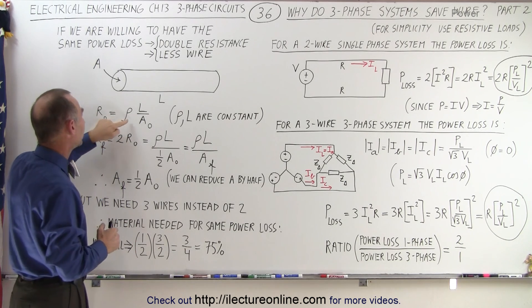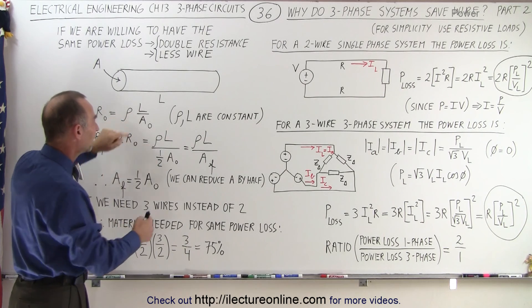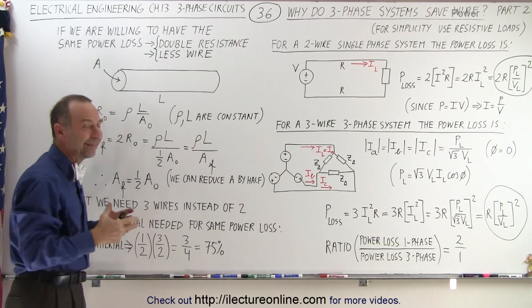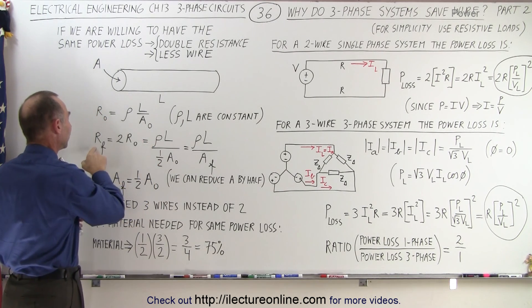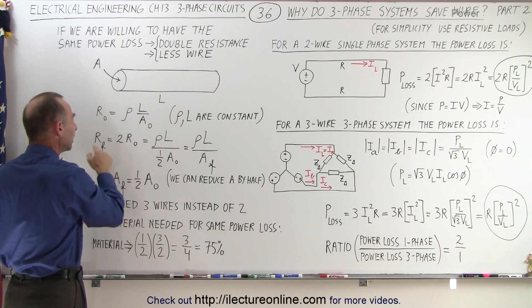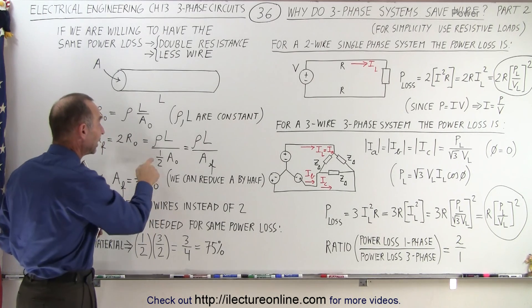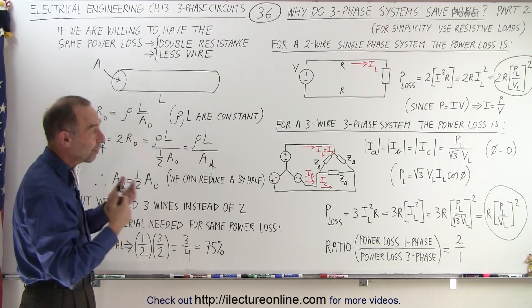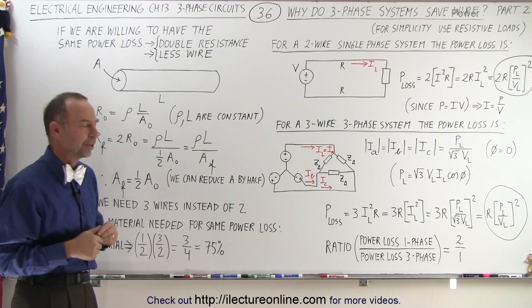Since the resistance is equal to the resistivity times the length divided by the cross-sectional area, and realizing that the resistivity and the length are the same for both systems, we can only change the cross-sectional area. Therefore, if the final resistance can now have twice the resistance, we can get by with half the cross-sectional area. In a three-phase system with the same power loss, we can go to half the cross-sectional area.